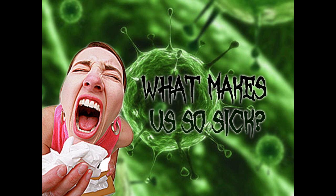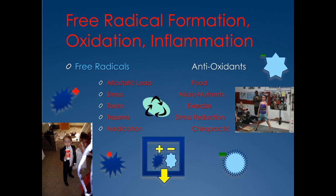Let's get down to the nitty-gritty — what makes us sick? Not external factors, but what happens in the body. How does the body go from healthy to sick? The foundation for it all is right here: free radical formation, oxidation, and inflammation. This is the process that lays the groundwork for every step along the way that makes us sick, ill, and diseased. Free radicals are also called ROS — reactive oxygen species.